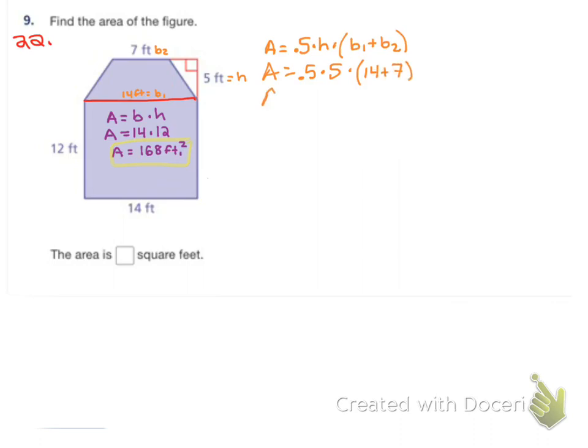And we can just type all that really quickly into our calculator. When we do 0.5 times 5 times, in parentheses, 14 plus 7. Close your parentheses, you get 52.5 feet squared.